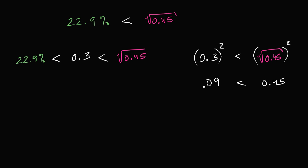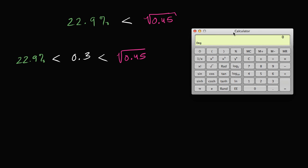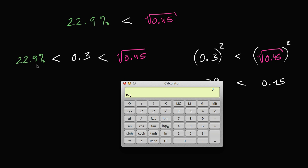Now another way you could do it, you could take out a calculator. Let me get the calculator out. 22.9% is the same thing as 0.229. So we really just want to compare this quantity to the square root of 0.45.